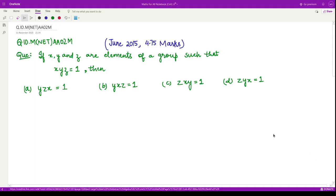Hello everyone, welcome to this video. In this video we shall see a question from June 2015 consisting of 4.75 marks. The question says if x, y, and z are elements of a group such that xyz = 1, then which among these four options is correct?